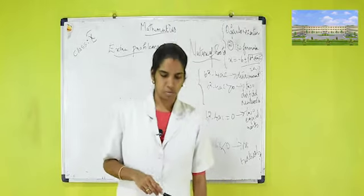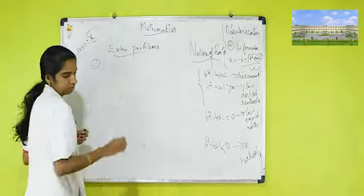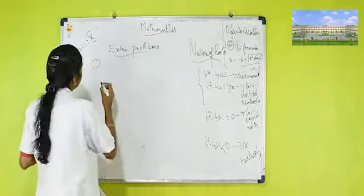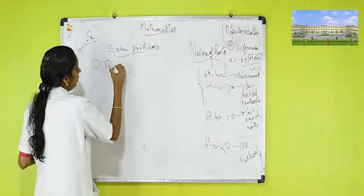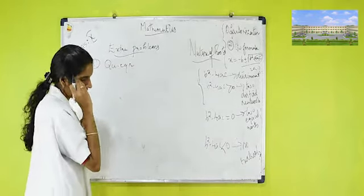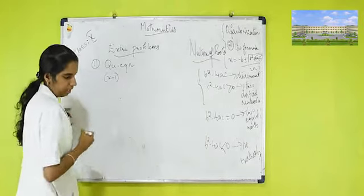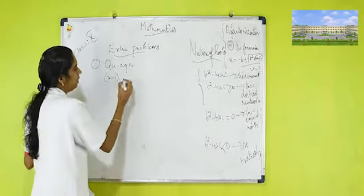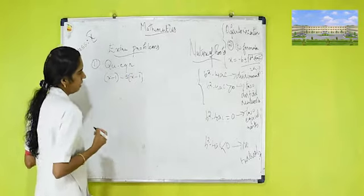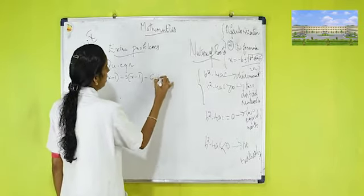Now we move to the problems. Write down the first problem: Solve the quadratic equation (x − 1)² − 5(x − 1) − 6 = 0.